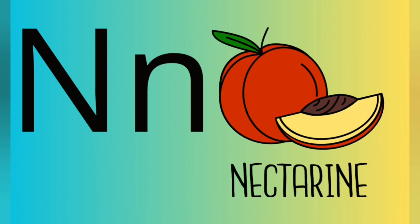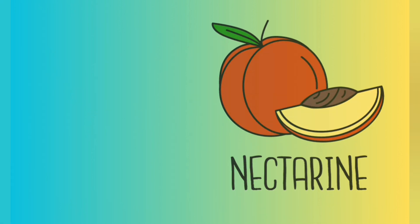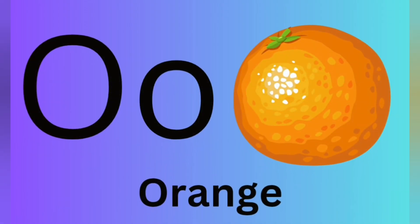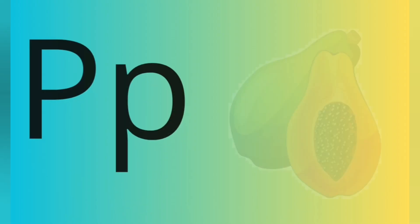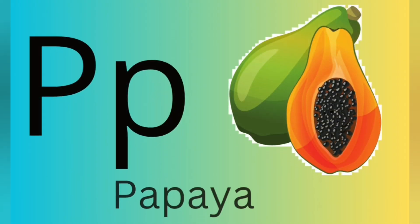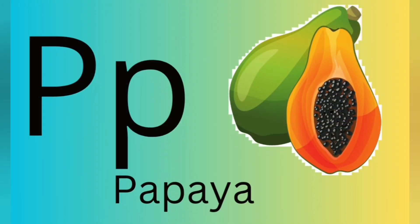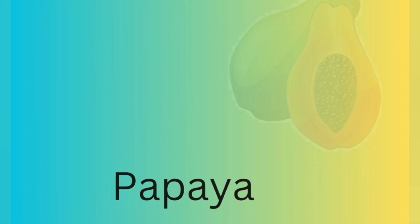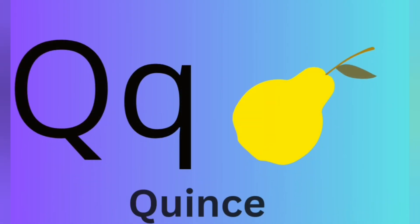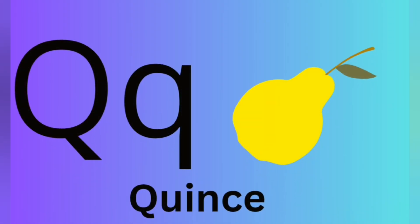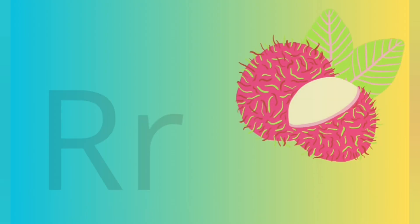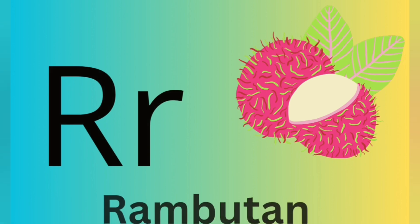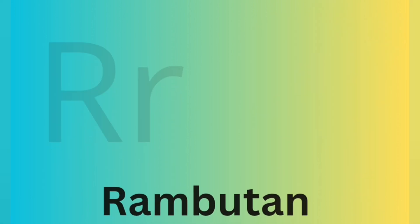N for nectarine, O for orange, P for papaya, Q for quince, R for rambutan.